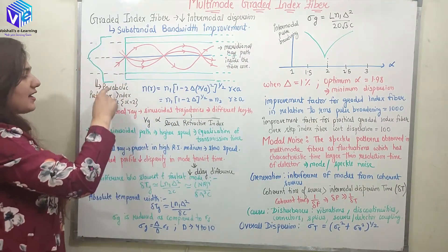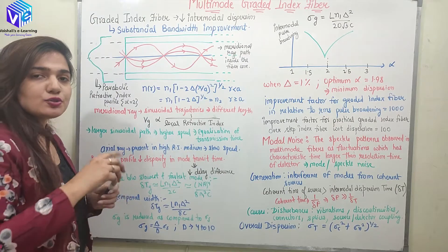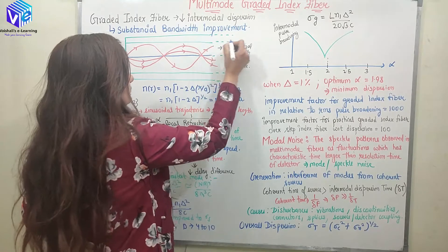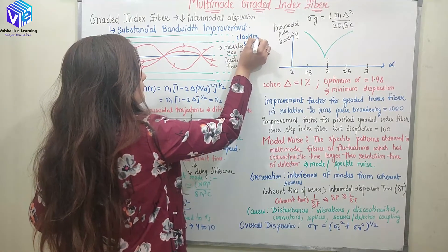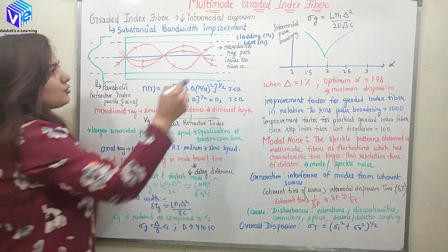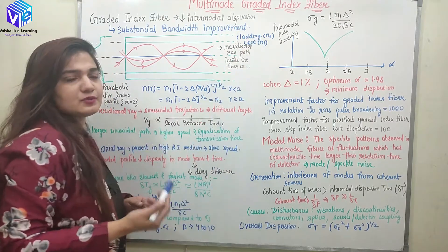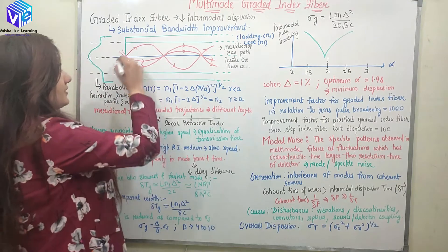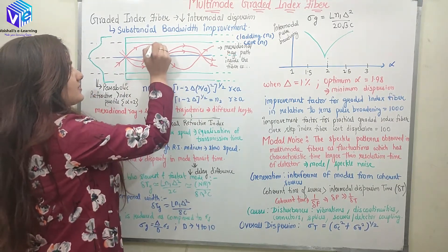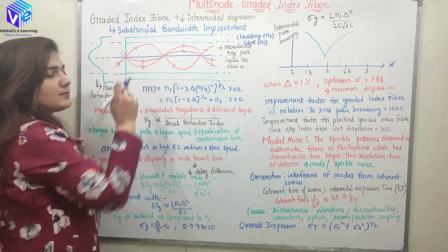This is the parabolic refractive index profile. I have considered alpha equal to 2, and this is the reason I am calling it the parabolic refractive index profile. The core has refractive index n1 and the cladding has refractive index n2. These are the different paths of the meridional ray inside the optical fiber. Let's consider this to be meridional ray 1, this to be meridional ray 2, and this to be meridional ray 3.